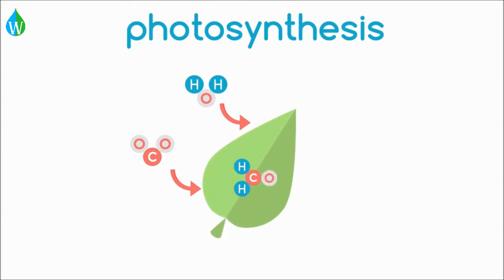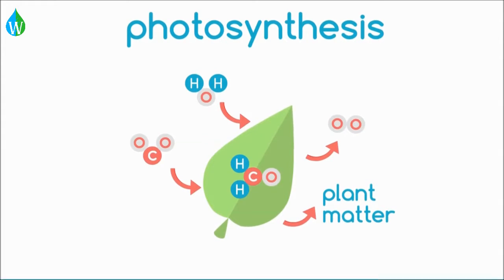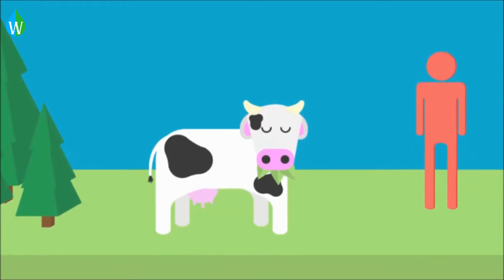The carbon is used to build up new plant material. Animals eat the plants, or other animals, to build up their bodies.